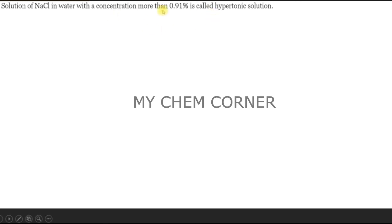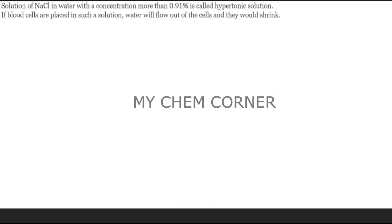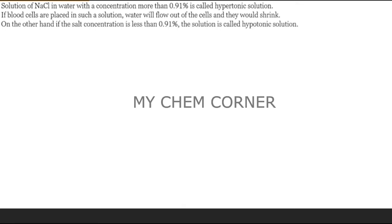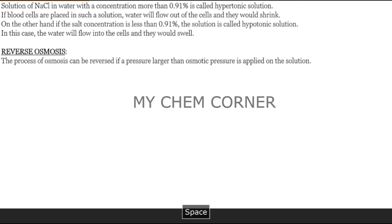A saline solution with concentration more than 0.9% is called hypertonic. If you place blood cells in such a hypertonic solution, they would shrink. If the concentration is less than 0.9%, it is called hypotonic - placing red blood cells in it would cause them to swell. This is why we need normal saline at exactly 0.9% NaCl for intravenous injections, so that blood cells neither shrink nor swell.